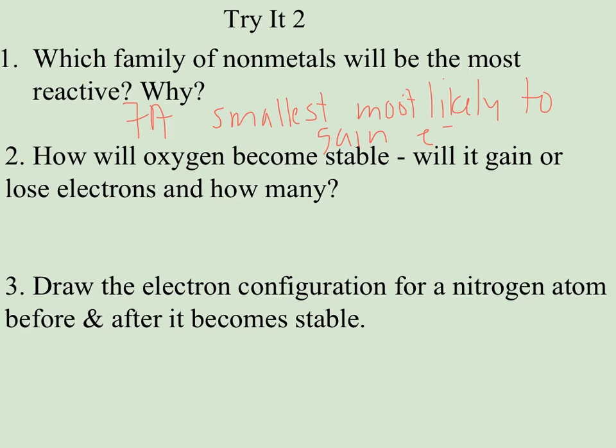How will oxygen become stable, will it gain or lose electrons, and how many? Well if I look, I see that oxygen is in group 6A or 16, so that lets me know there's 6 valence electrons. I also see it's a nonmetal. So that means it's more likely to gain than lose electrons. So I would expect it to gain 2 electrons to get a full shell of 8.